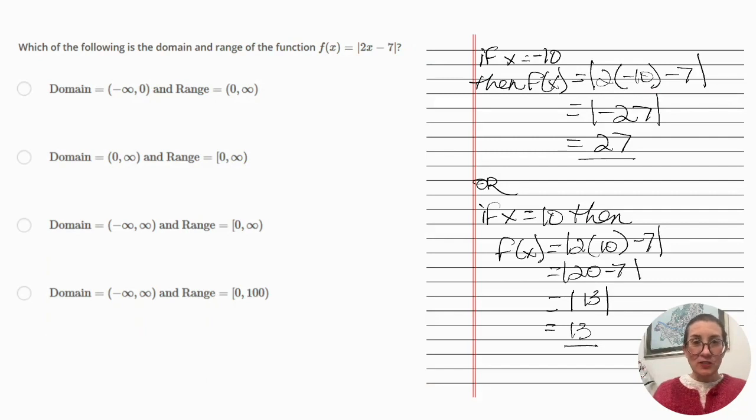Alright, let's get to the first question. Which of the following is the domain and the range of the function f of x equals the absolute value of 2x minus 7?